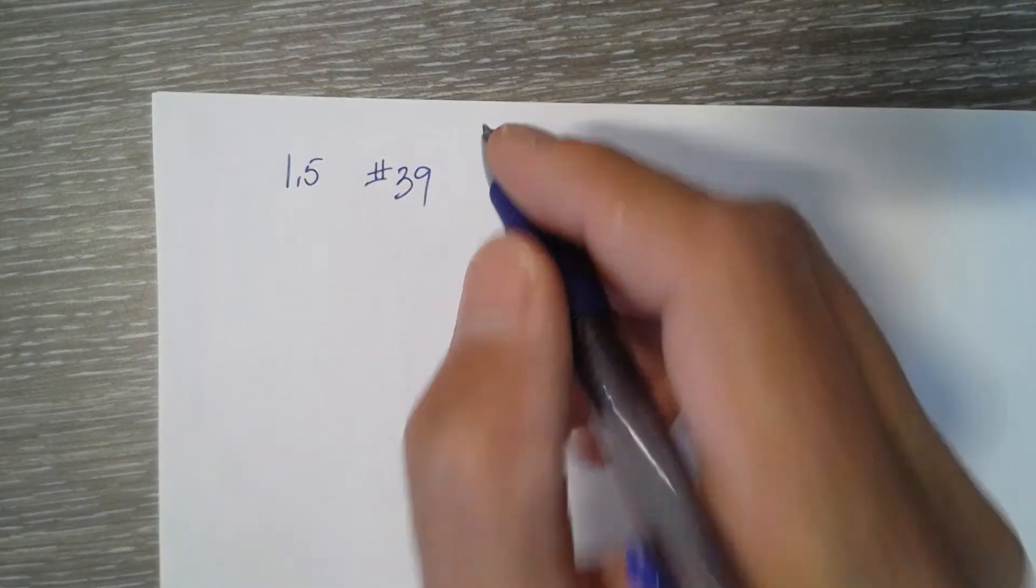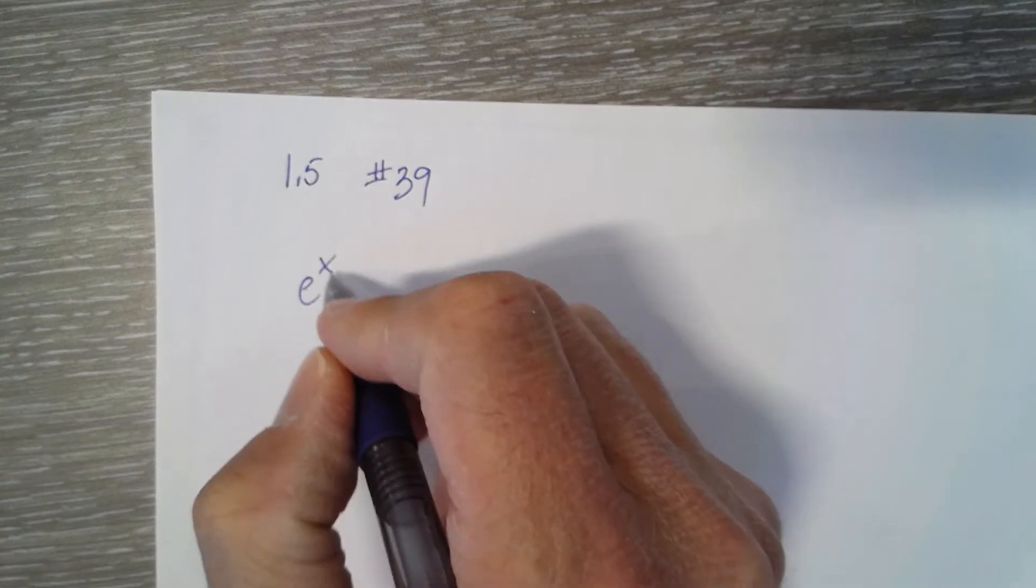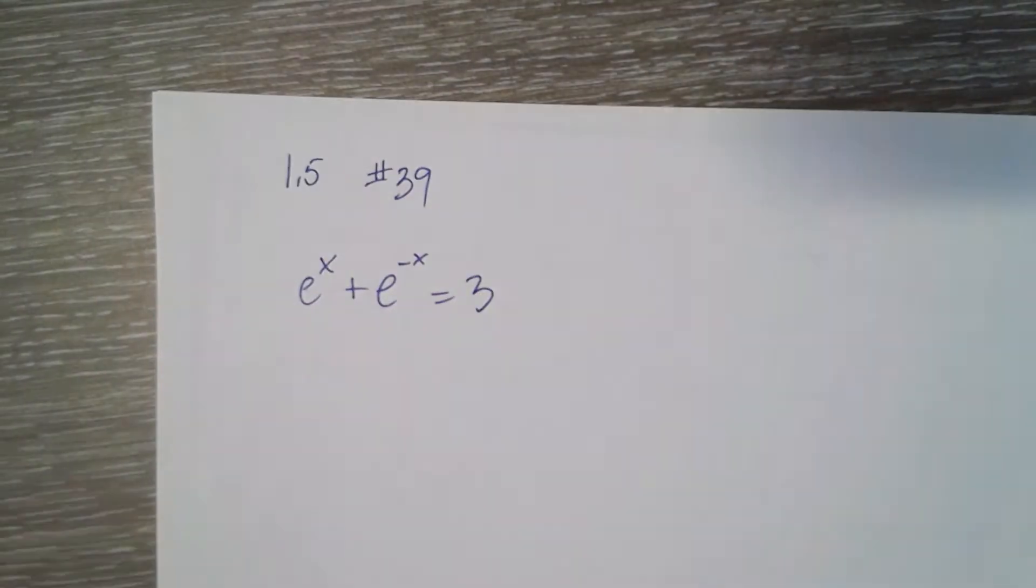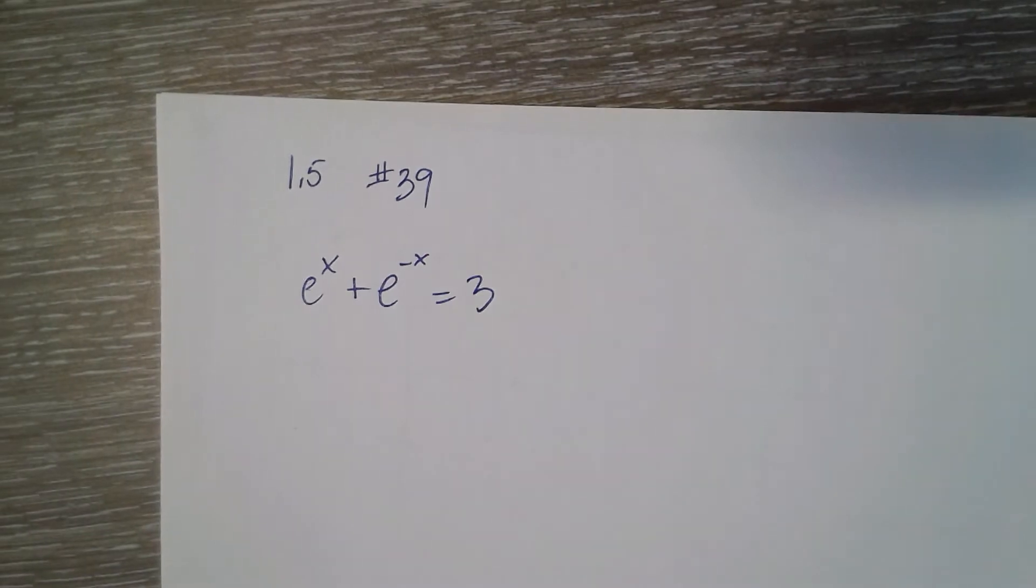It says e to the x plus e to the negative x equals 3. Solve this equation algebraically. Support your answer graphically.